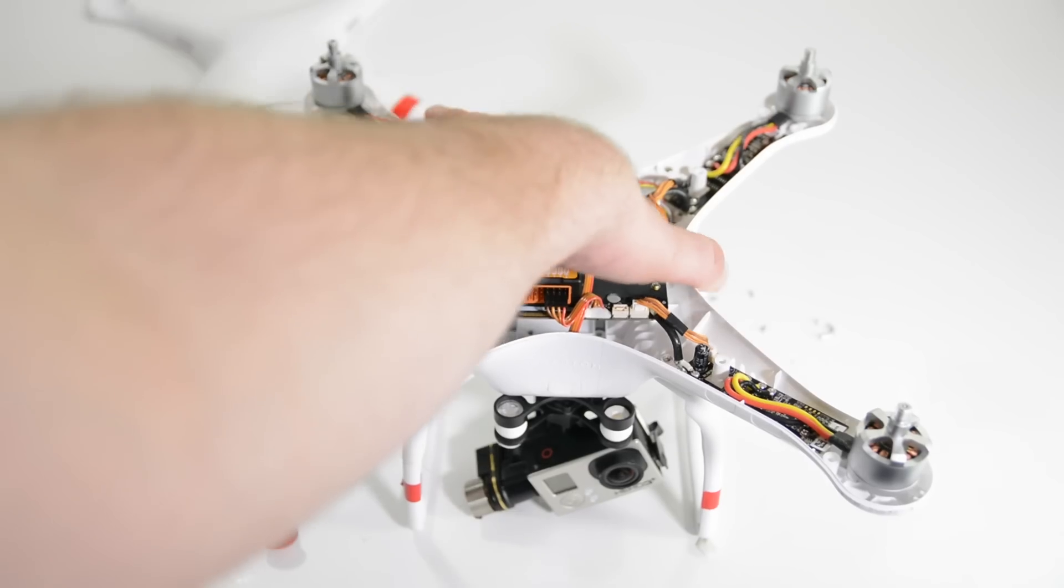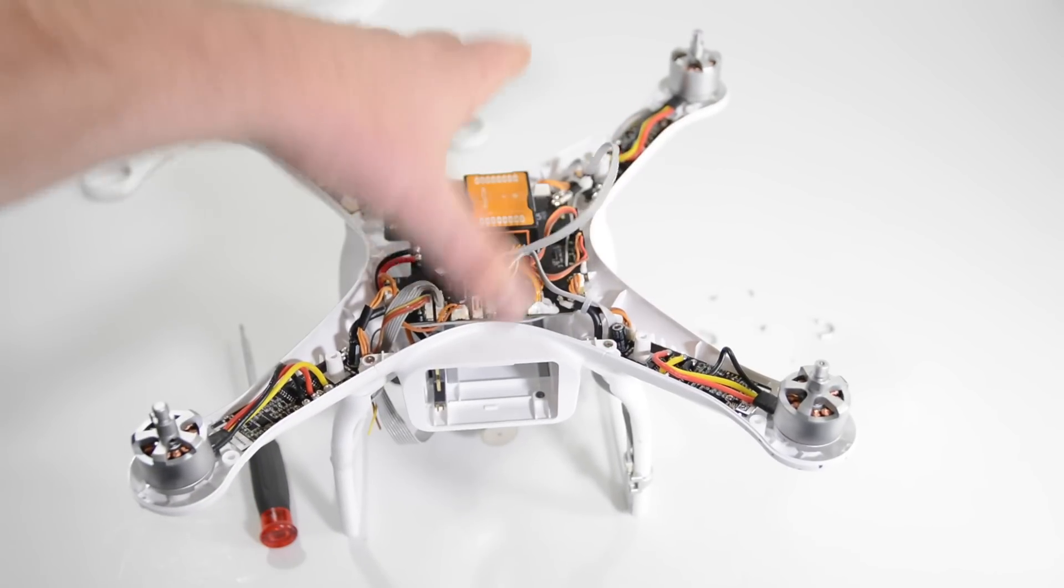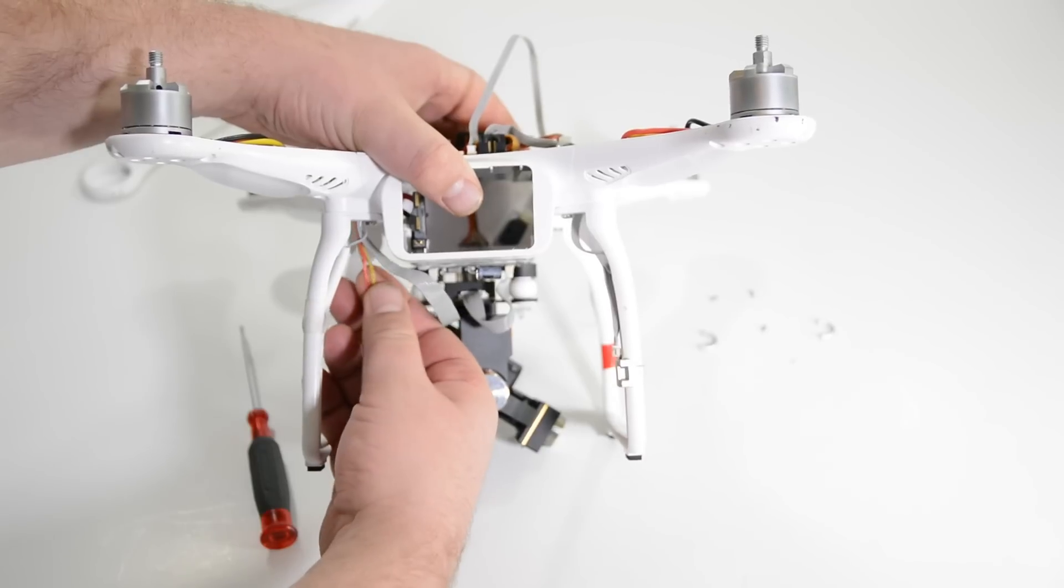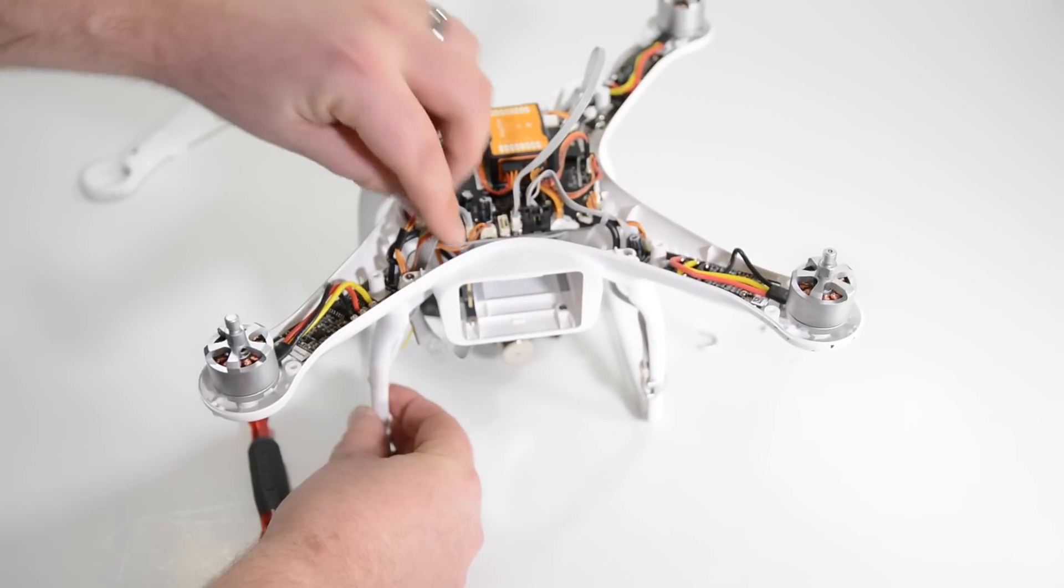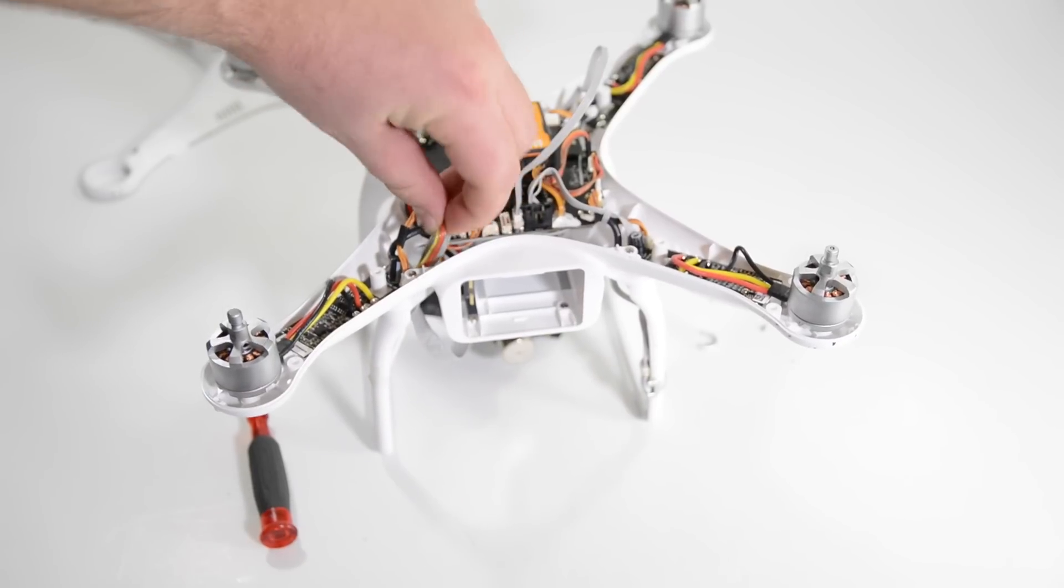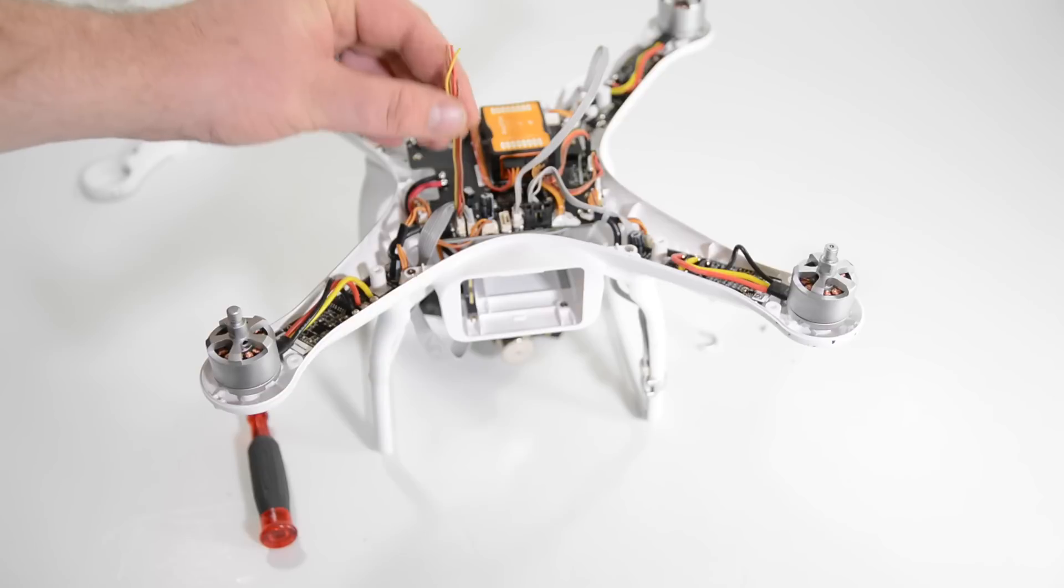On the back left of the quadcopter you'll see a cable that runs down along one of the legs and you'll see a yellow, light brown, red and brown cables there and actually what we'll need to do is feed this back up into the body.